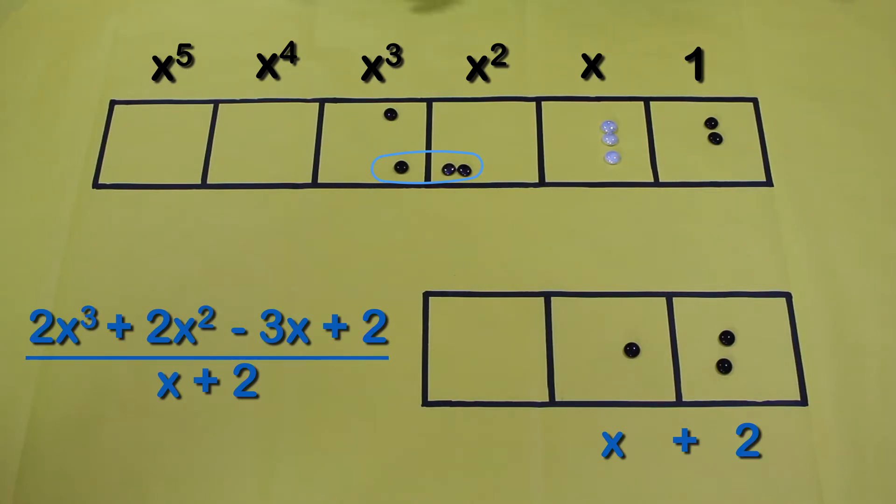But the nifty thing about this is that you can add any amount of dots to any of these boxes while keeping the value of each box the same. If I put in one dot, that would be adding one to the 2x² box, but if I add one antidot, that would subtract one, so these two would be zero.